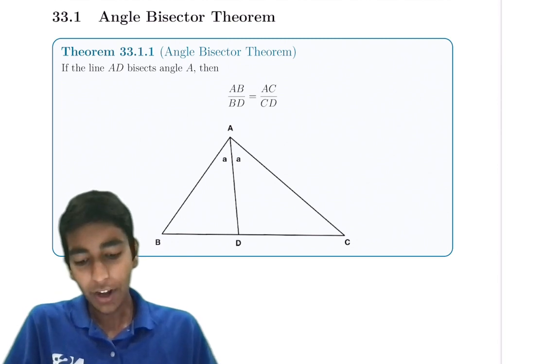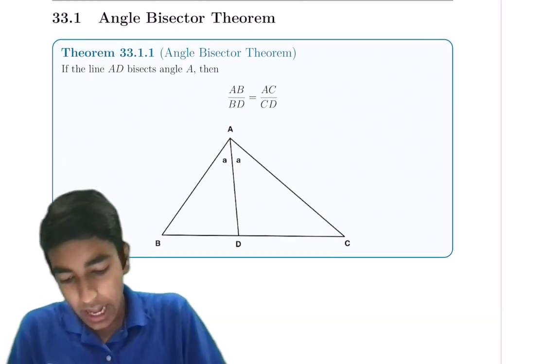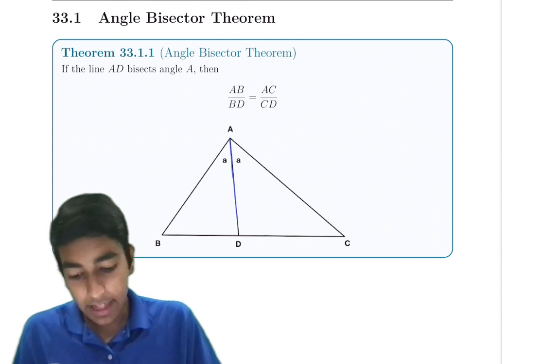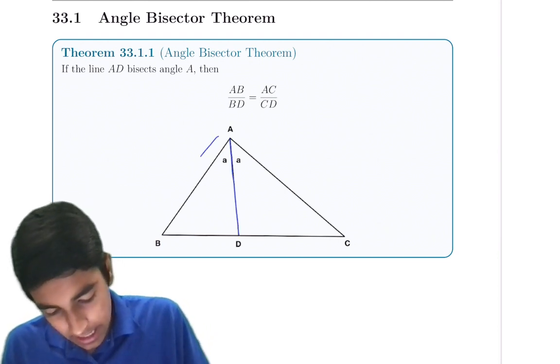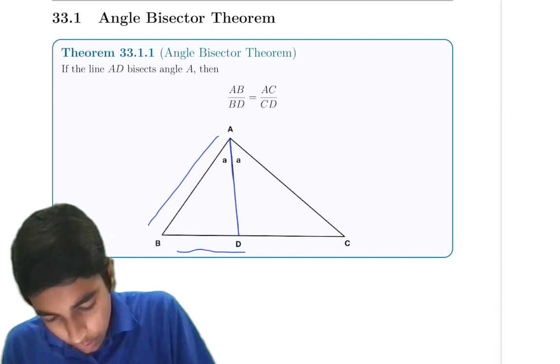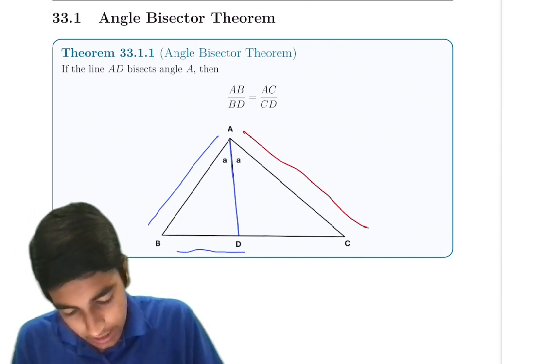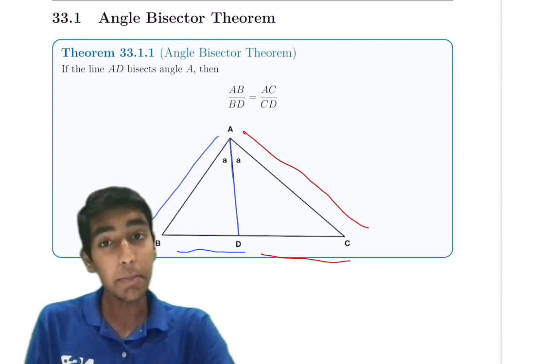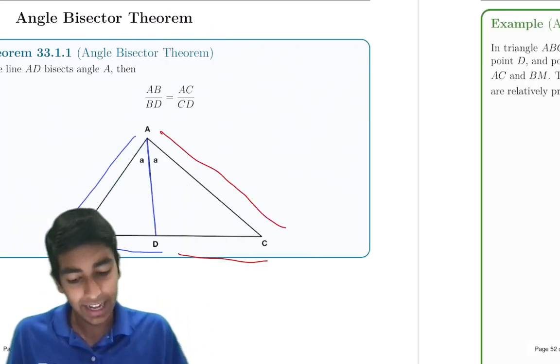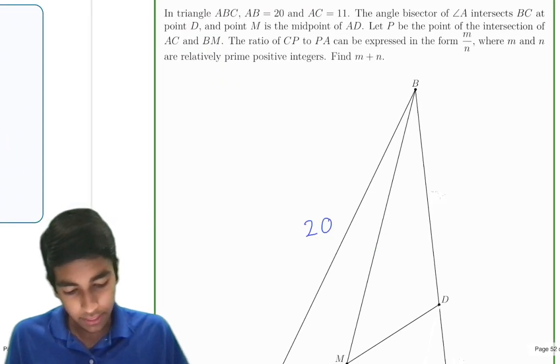We're going to be exploring what angle bisectors really mean with the angle bisector theorem. What is the angle bisector theorem? If a line AD bisects an angle A, then we have that AB over BD equals AC over CD. And that is what the angle bisector theorem states. It's extremely powerful when we have a lot of angle bisectors, like in this problem.